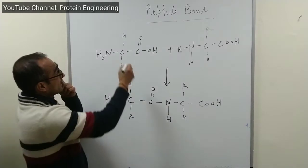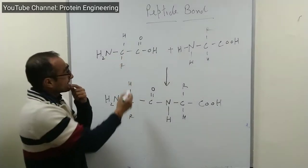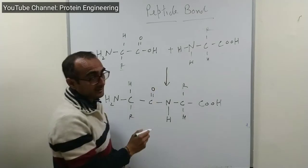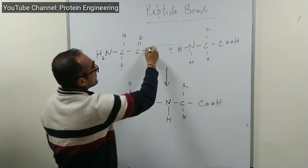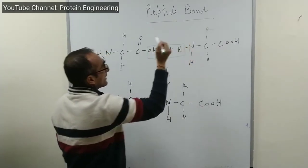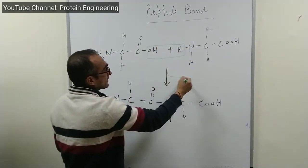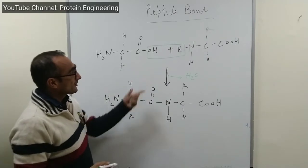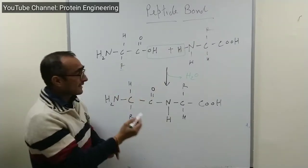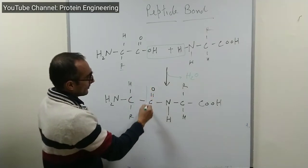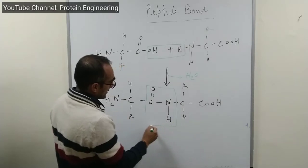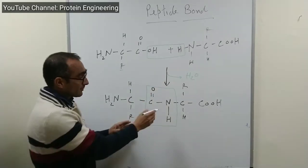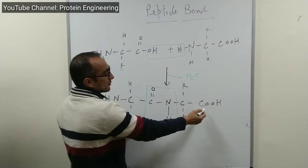For example, looking at the C-alpha atom, amino group, and carboxyl group of one amino acid with its R group and hydrogen atom, and similarly another amino acid — these two amino acids react through the C-terminal of one and the N-terminal of another. This results in the release of a water molecule, making it a dehydration synthesis reaction, forming the special amide linkage known as the peptide bond. The C-O-N-H bond is called the peptide bond, one water molecule is released, and the product is called a dipeptide.